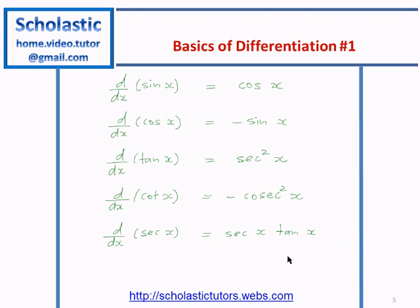And then, secant x. The differential of secant x equals secant x times tan x. And lastly, we can see the cosecant. If you differentiate cosecant x or cosec x, you get negative cosec x times cot x.